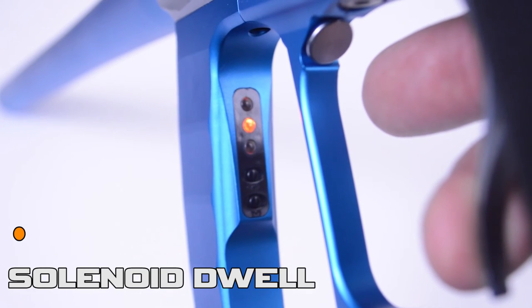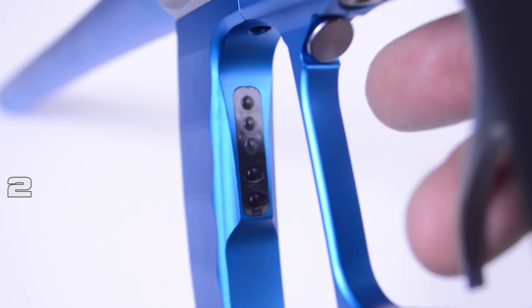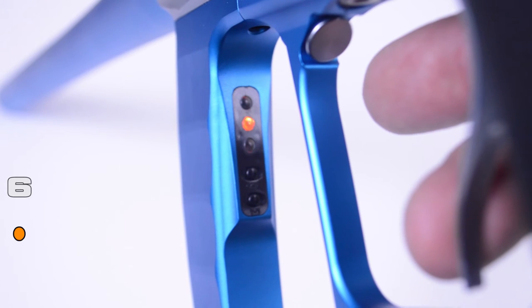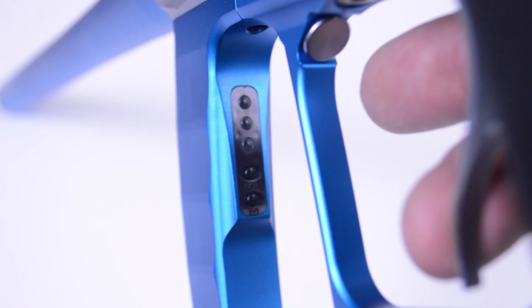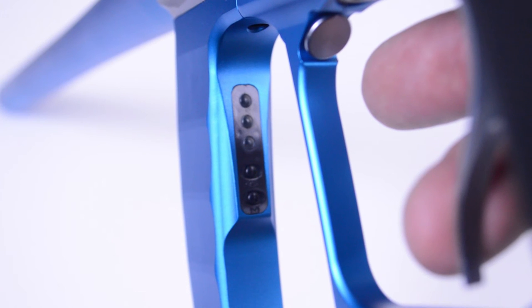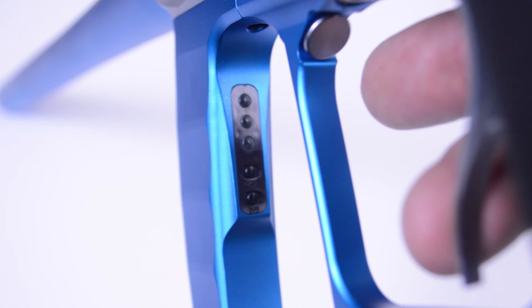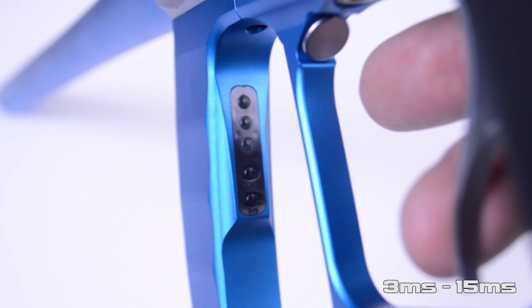Hold down the trigger for two seconds and then release to engage the programming. The blinking LED will show that the Proton is currently set at and comes set at a dwell of six milliseconds out of the box by blinking six times. That's on a scale of three milliseconds to fifteen milliseconds.